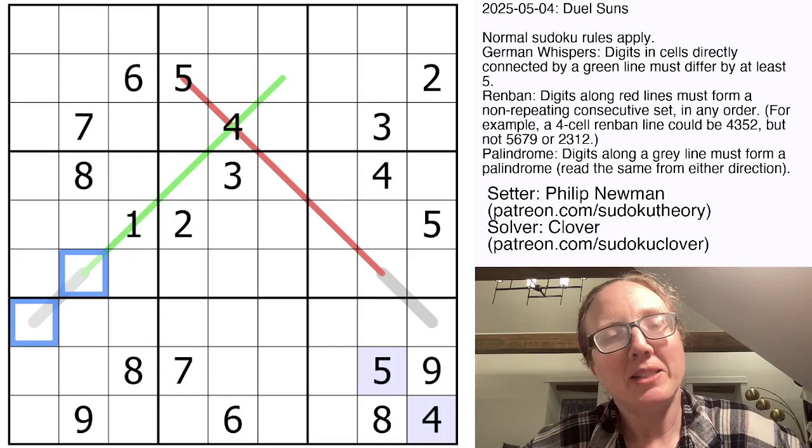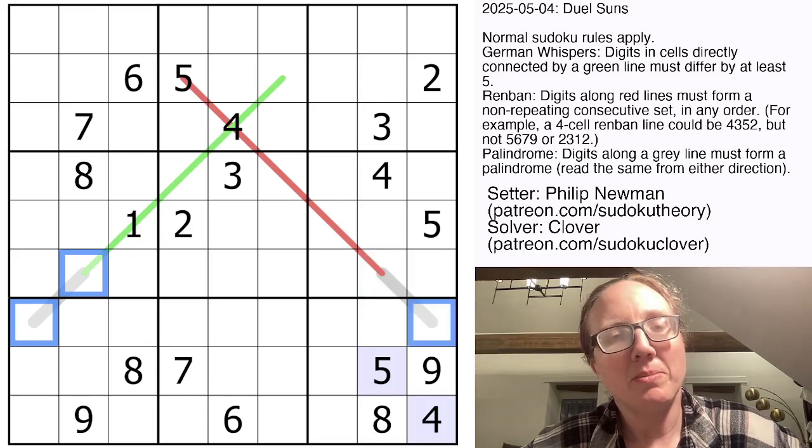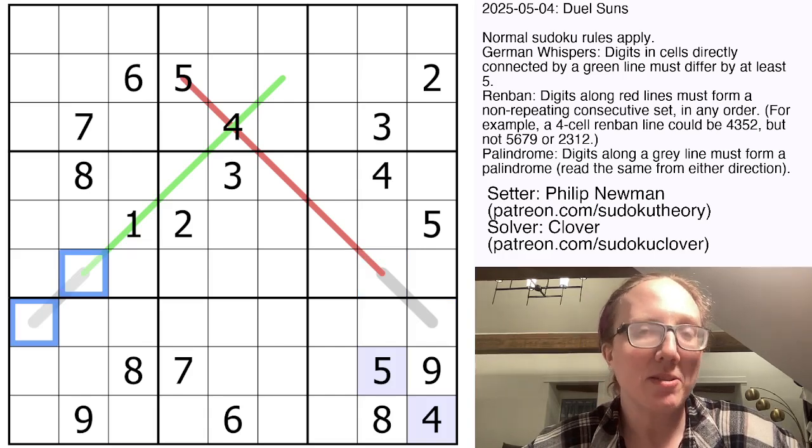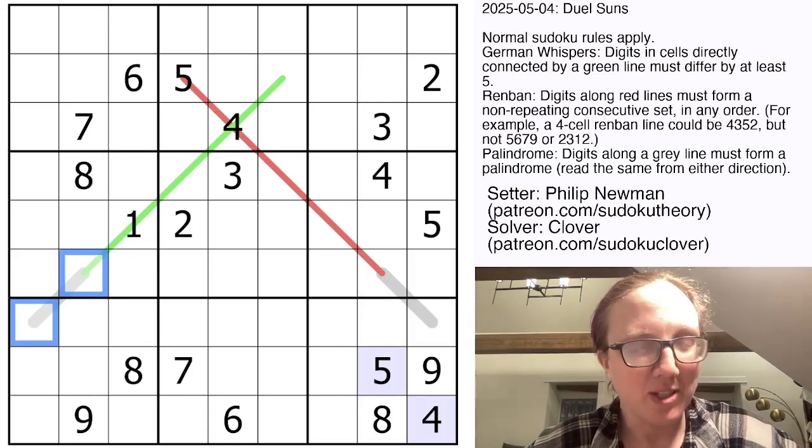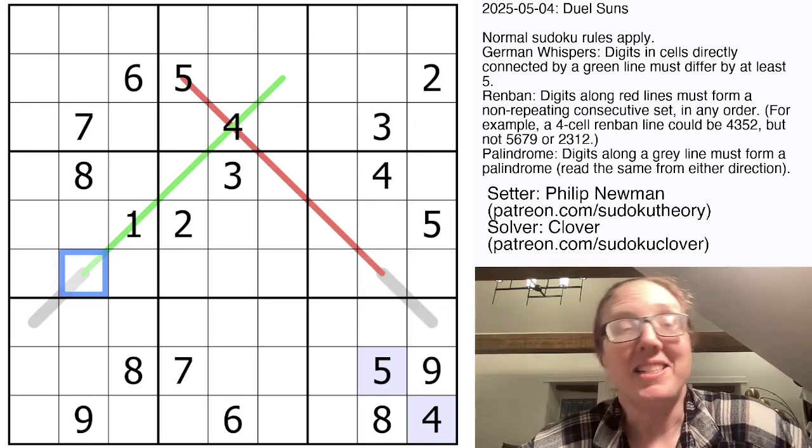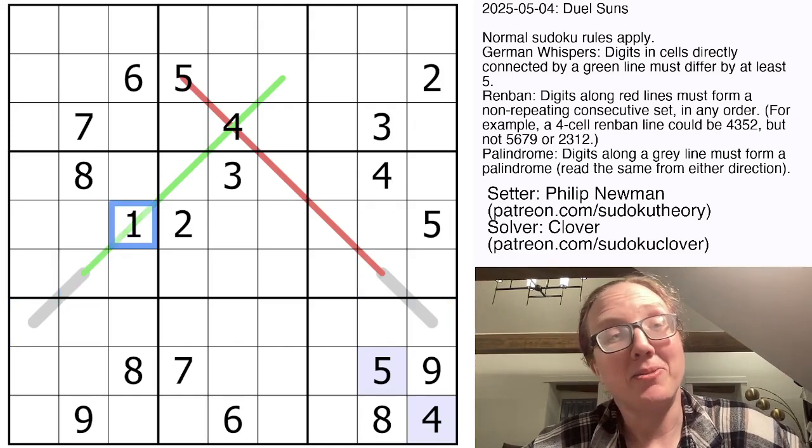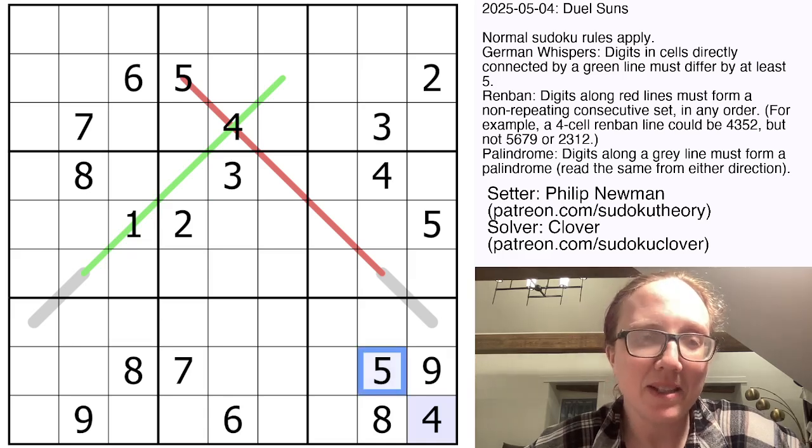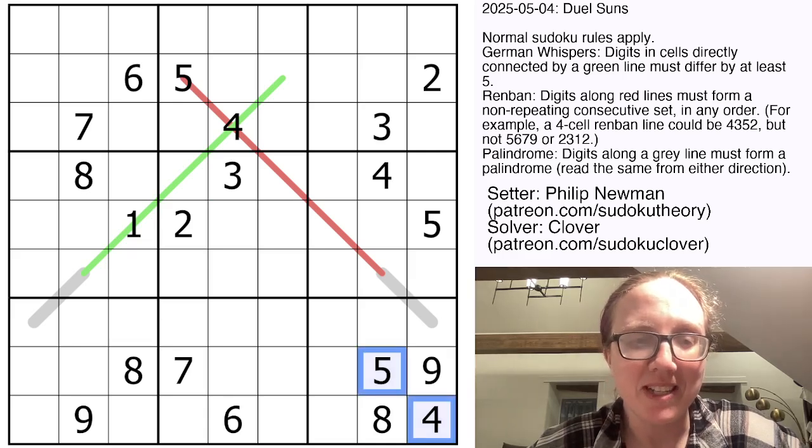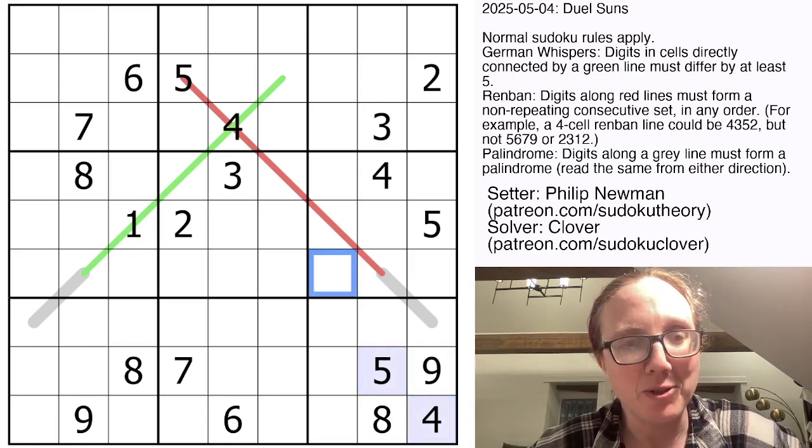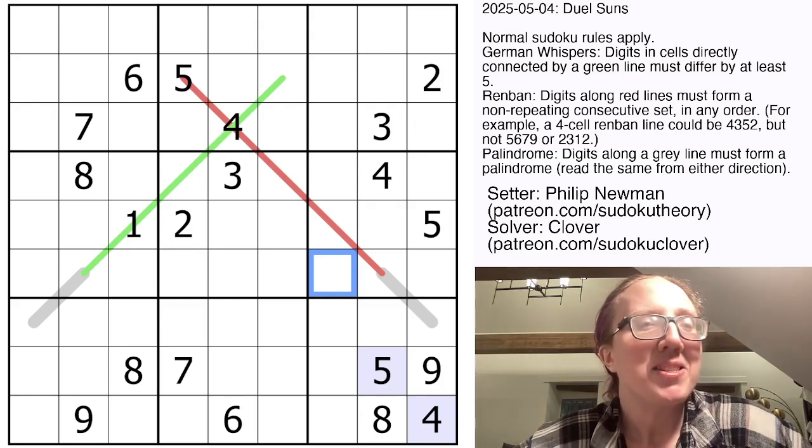These are both palindrome lines. Digits on a palindrome have to appear the same forward and backwards. In the case of these lines, because they're teeny tiny, they're just two cells each, that literally just means these two digits have to be equal, and these two digits have to be equal. And as far as I'm aware, the blue digits here do not have any logical significance. It's just for visual effect.